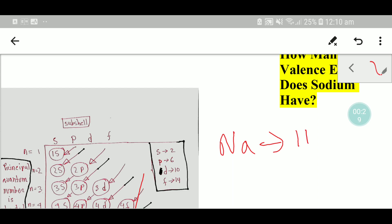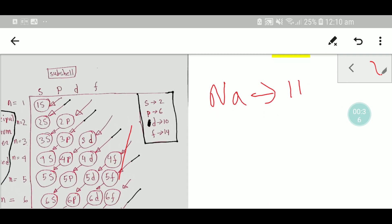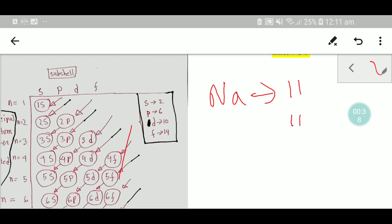The atomic number 11 indicates that sodium has 11 electrons and 11 protons. As you know, the charge of electrons is negative and the charge of protons is positive.